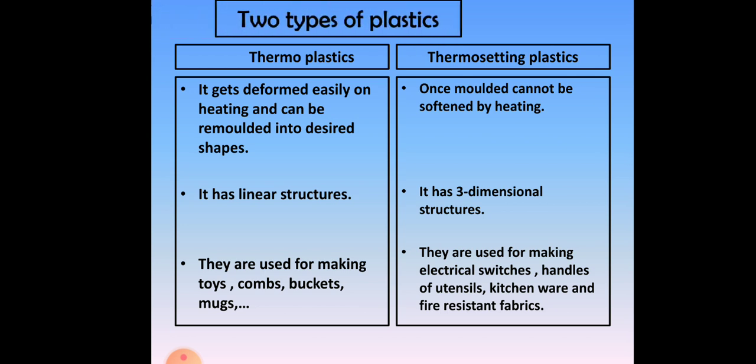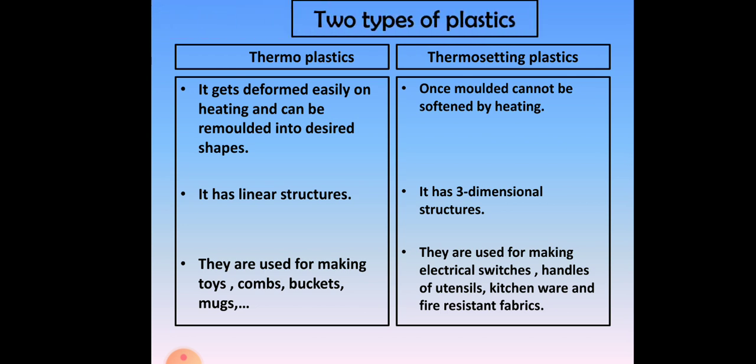There are two types of plastics: thermoplastics and thermosetting plastics. Thermoplastics get deformed easily on heating and can be remolded into desired shapes; they have linear structures. Thermosetting plastics, once molded, cannot be softened by heating; they have three-dimensional structures. Thermoplastics are used for making toys, combs, buckets, and mugs. Thermosetting plastics are used for making electrical switches, handles of utensils, kitchenware, and fire-resistant fabrics.